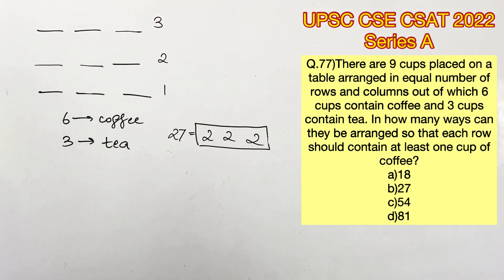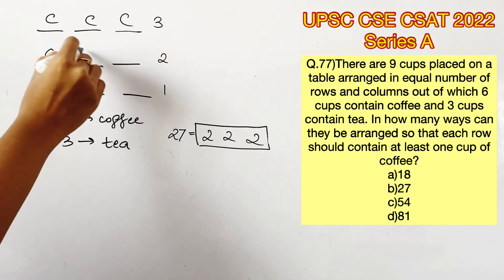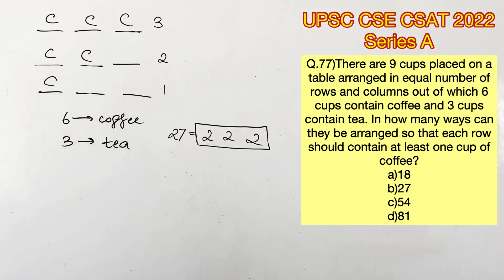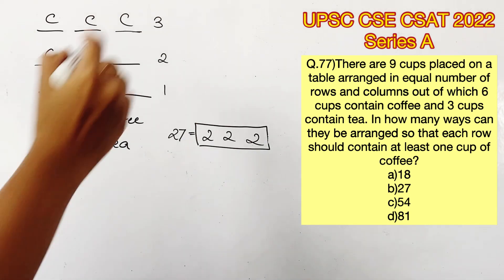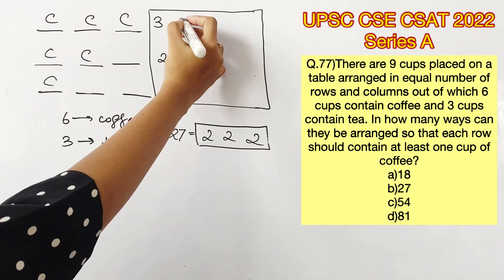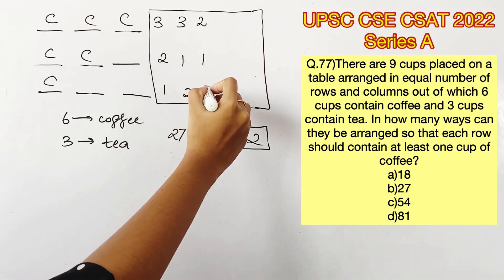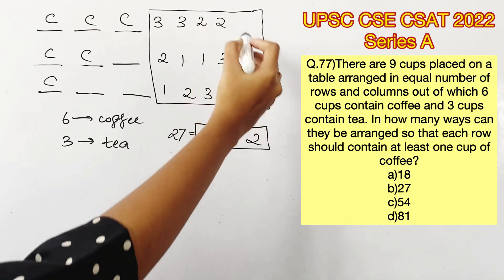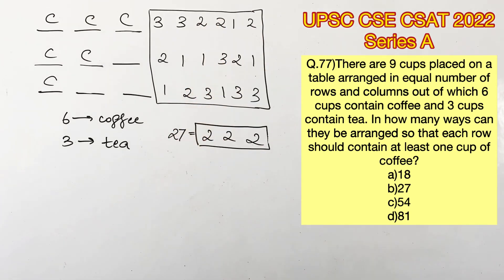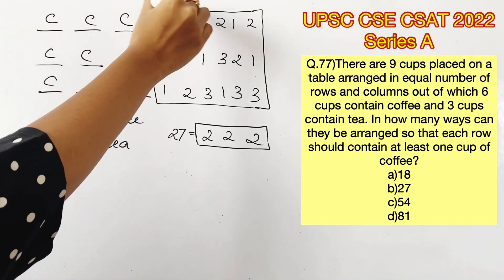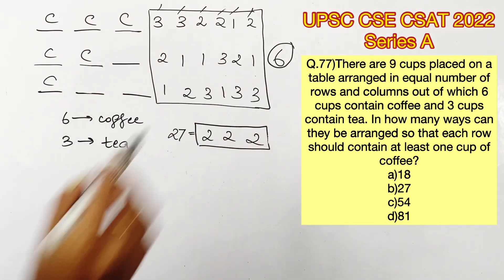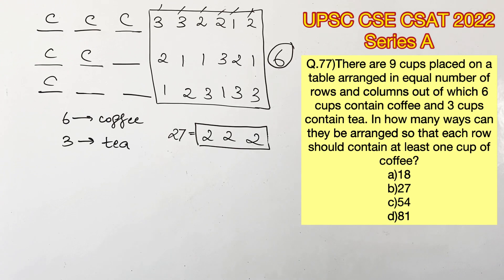Now let's consider the distribution of three, two, and one. The first row contains three coffees, the second two, and the third one. These numbers themselves can be interchanged: for example, first row three, second one, third two; or first row two, second one, third three — and so on. These permutations of the numbers give us a total of six different possibilities.